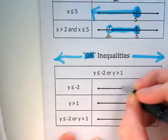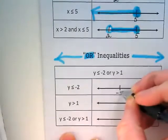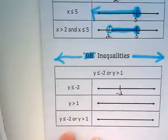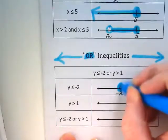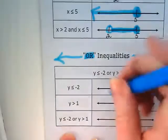We have y is less than or equal to negative 2. So put your negative 2 on there. And it's a closed circle because it's less than or equal to with the arrow going to the left.